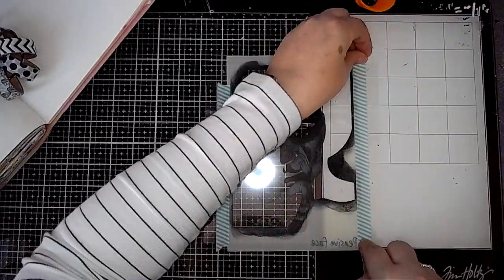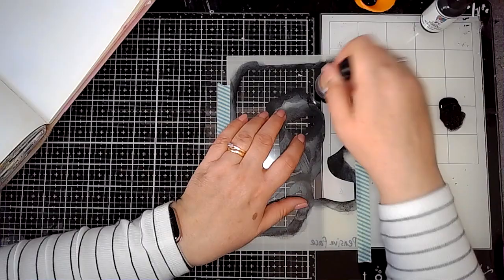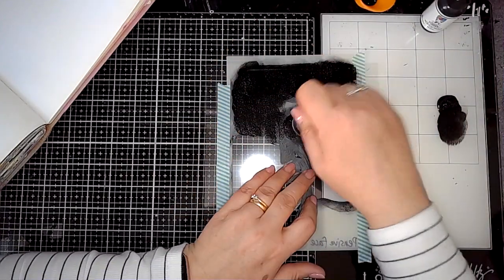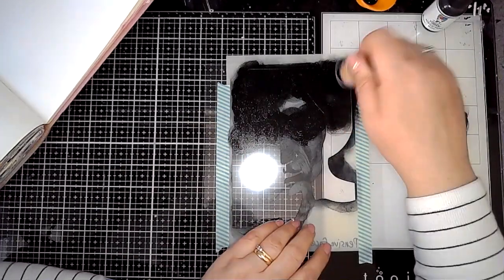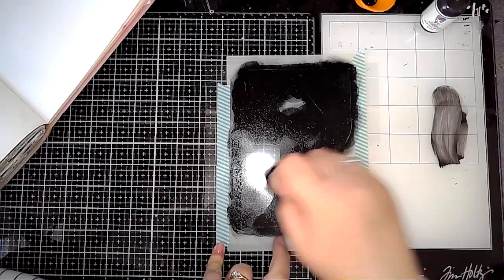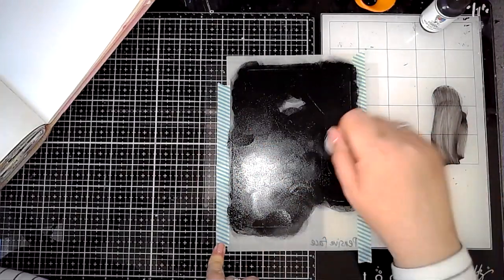I'm going to be stenciling this onto acetate, so I'm just taping it in place using a bit of washi tape and then I'm using a blending tool and just dabbing through some black paint, trying not to have too much because I don't want it to bleed under the details of the stencil.